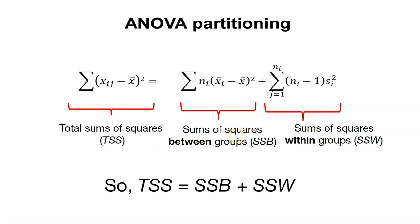We can then think about the sum of squares between groups. Within each group, we take each value n in that treatment, the mean from that treatment minus the grand mean, or the mean from the entire dataset, and we square that. This can represent differences between the different groups, because this is the mean for the i-th treatment and this is the mean for all of the data.